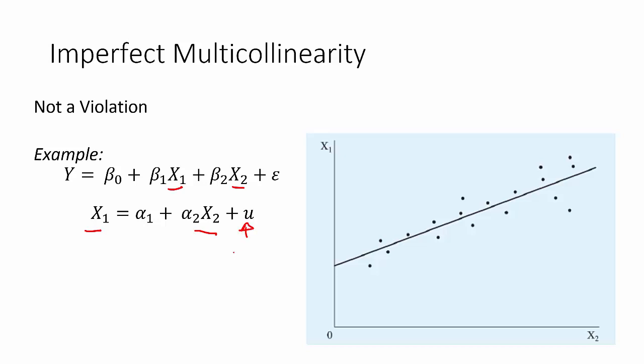In other words, there's some error. x2 does not perfectly predict x1, but it kind of predicts x1. So for different values of x2, we can sort of guess what x1 would be, but not perfectly figure it out.